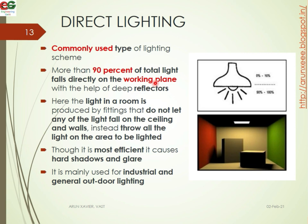In direct lighting, deep reflectors are used. The light fittings do not let any light fall on the ceiling and walls. All of the light is thrown directly onto the area to be illuminated. It is the most efficient type, but it causes hard shadows and glare.